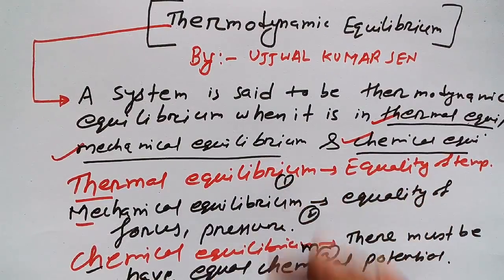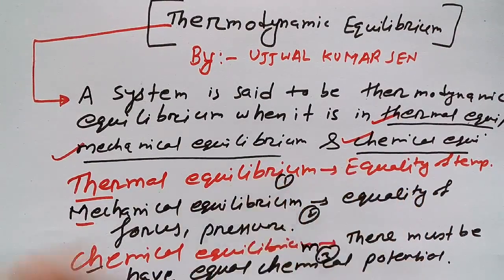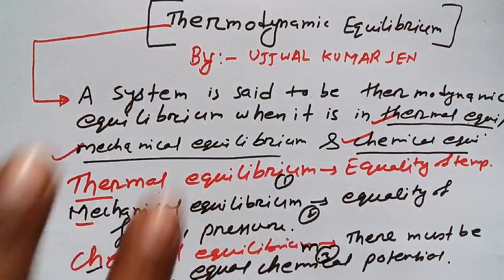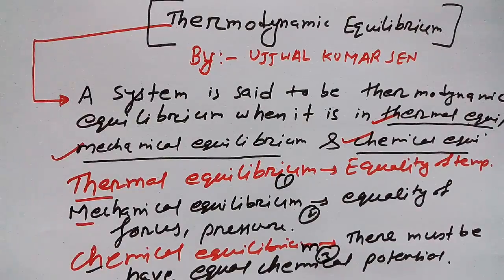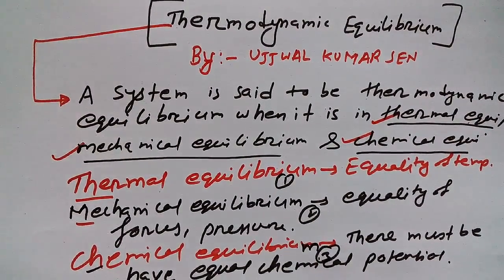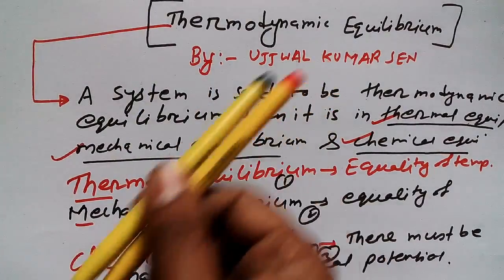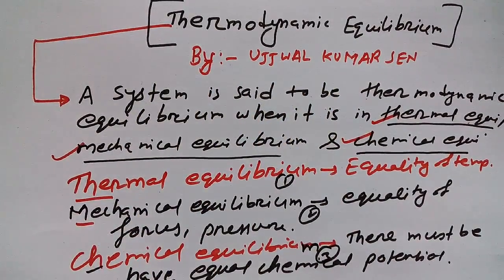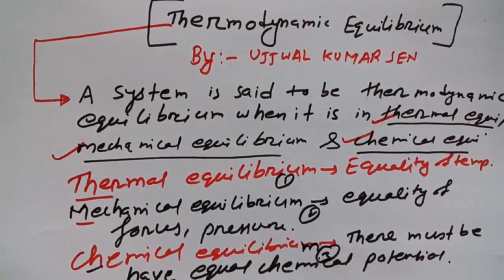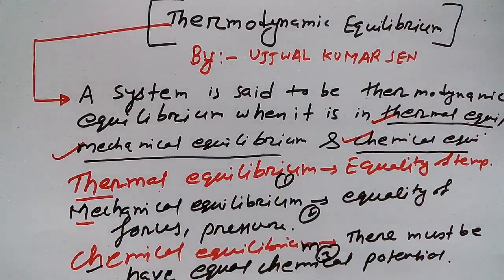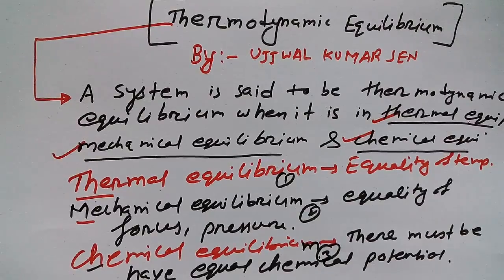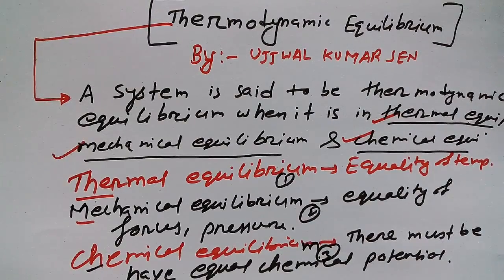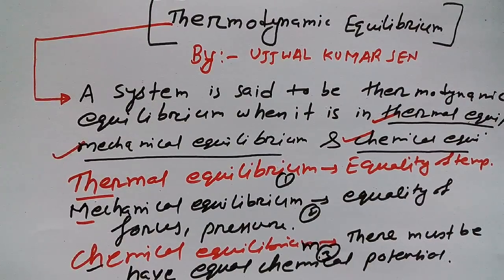Let me revise all these things so you can understand properly. What is thermodynamic equilibrium? All those things will be in equilibrium — there will not be any change. Those three things are: thermal equilibrium, which requires equality of temperature; mechanical equilibrium, which requires equality of pressure and forces; and chemical equilibrium, which requires equality of chemical potential.